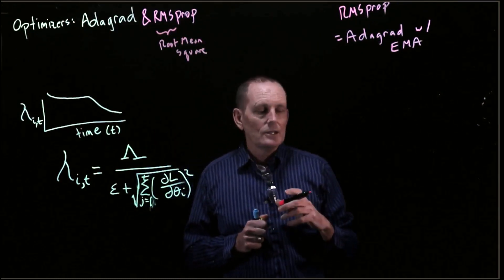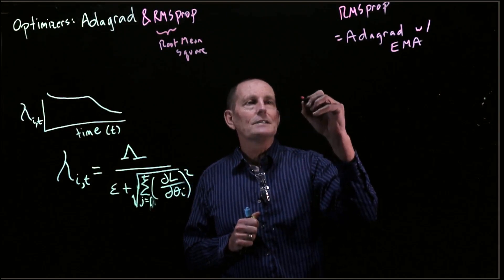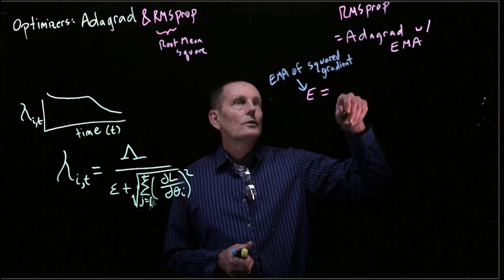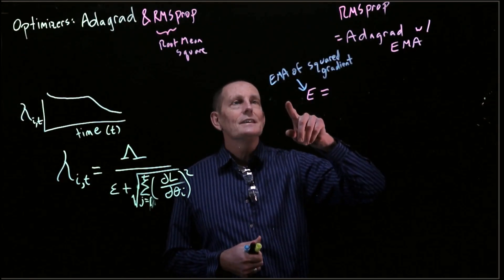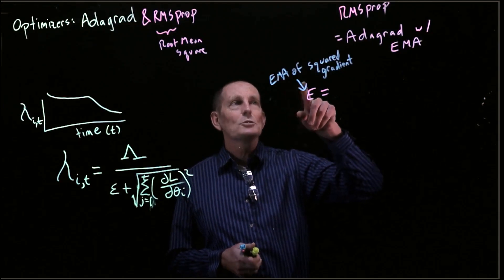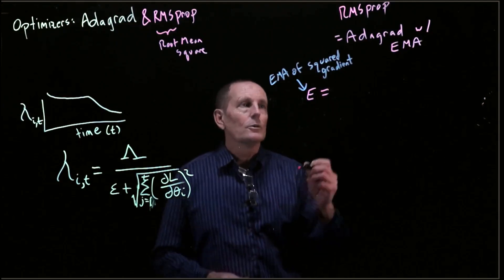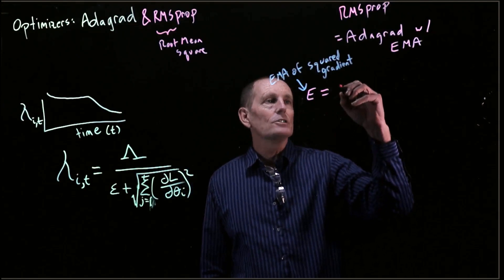So RMS stands for root mean squared. The idea is, we have some e. We're going to create an exponential moving average of the squared gradient.